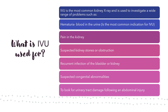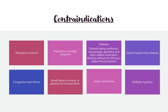IVU is the most common kidney x-ray, used to investigate problems such as hematuria, pain in the kidney, suspected kidney stones or obstruction, reoccurring infection of the bladder or kidney, suspected congenital anomalies, and urinary tract damage following abdominal injury. Contraindications include: allergies to contrast, pregnancy, diabetes, severe hepatic or renal disease, congestive heart failure, renal failure or anuria, sickle cell anemia, and multiple myeloma.